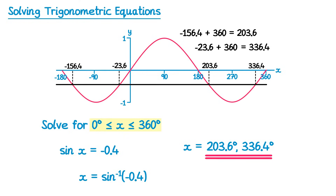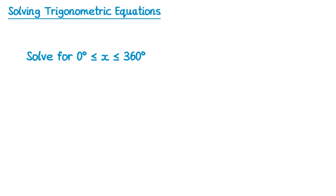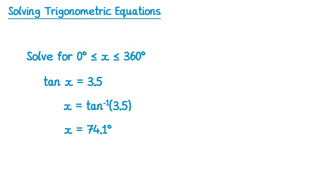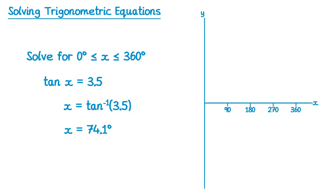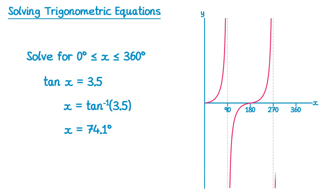So it's really tricky when you have sine and negative values on the right-hand side. Now what about tan? We need to look at some tan equations. Let's look at tan x equals 3.5. We start in the usual way — inverse tan of 3.5 — and that gives you 74.1 degrees to one decimal place. Now let's draw the graph of y equals tan of x. There are two asymptotes, at 90 and 270 degrees.